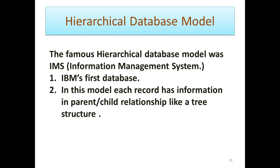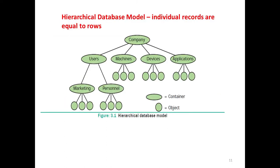Each record has information in parent-child relationship like a tree structure. You see, the hierarchical database model. Individual records are equal to rows. You see, the container. Here, we see the container. The object. The object has equal rows. You see, three rows. It should be even. Is the hierarchical, it should be like a tree. So, we simply call the hierarchical database model as a tree structure.